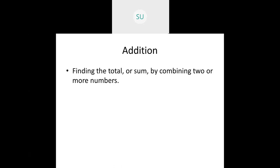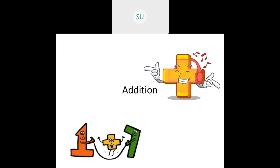If I say I have three apples and you have four apples, and we want to find how many apples we have altogether, we'll do three plus four. So how much is that? That is seven. We have seven apples altogether. So this is called addition.